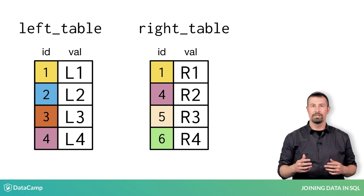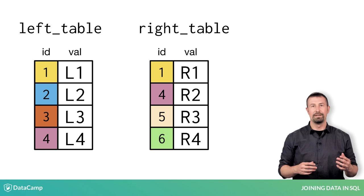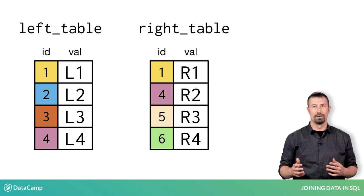In the videos in this chapter and the next, we'll often work with two tables named left and right. You can see that matching values of the ID field are colored with the same color. The ID field is known as a key field since it can be used to reference one table to another. Both the left and right tables also have another field named val.